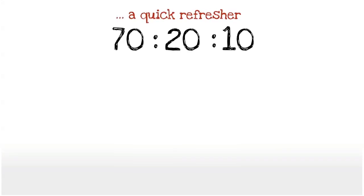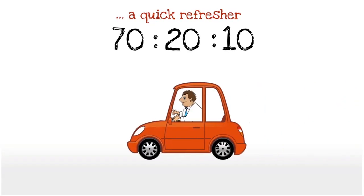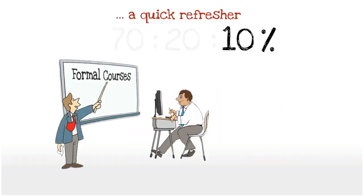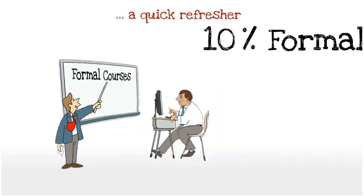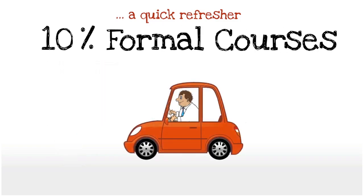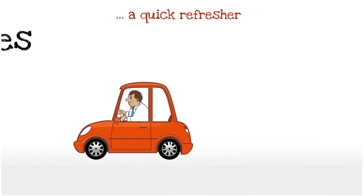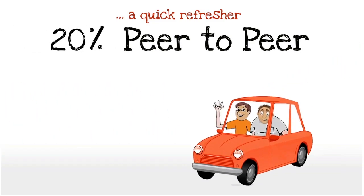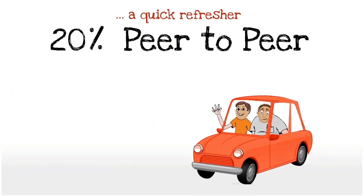A quick refresher of the 70-20-10 model. A good analogy is a car analogy. If we look at how we learn how to drive a car, 10% probably came from formal courses, 20% came from peer-to-peer — from parents, friends, other people.